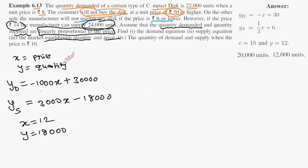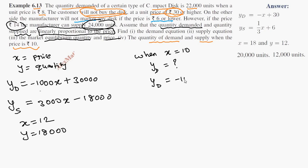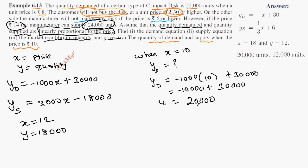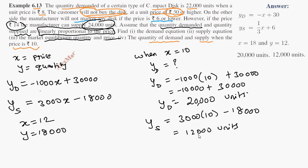Subdivision 4 asks for the quantity of demand and supply when the price is 10. When X = 10: Yd = −1,000(10) + 30,000 = −10,000 + 30,000 = 20,000 units. For supply: Ys = 3,000(10) − 18,000 = 30,000 − 18,000 = 12,000 units.